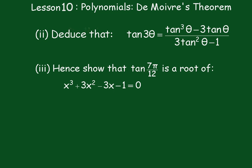In part three, we have to show that tanθ is a root of x³ + 3x² − 3x − 1 = 0. You have to look at the structure of part two — there's a tan³, a tan², and a tanθ — so if we let x equal tanθ, that's the trick for doing these ones.